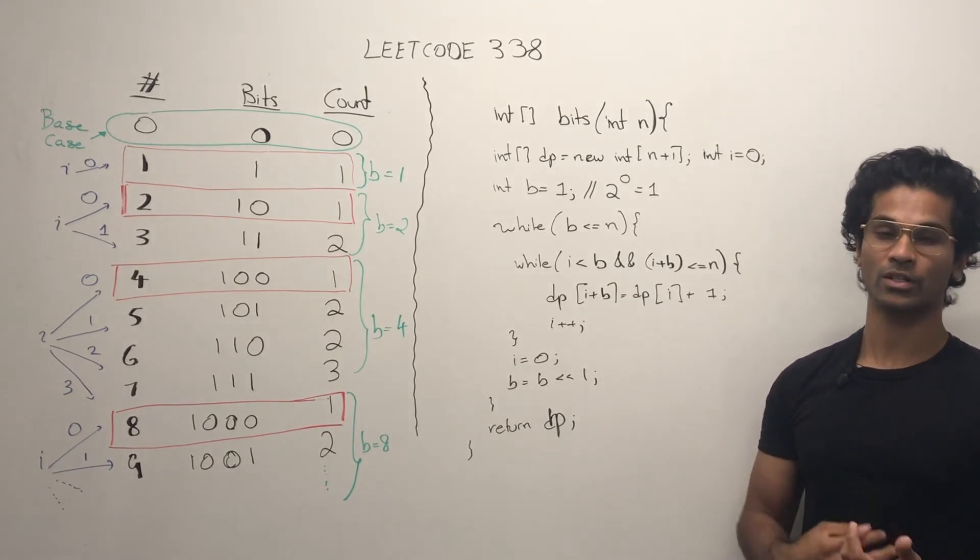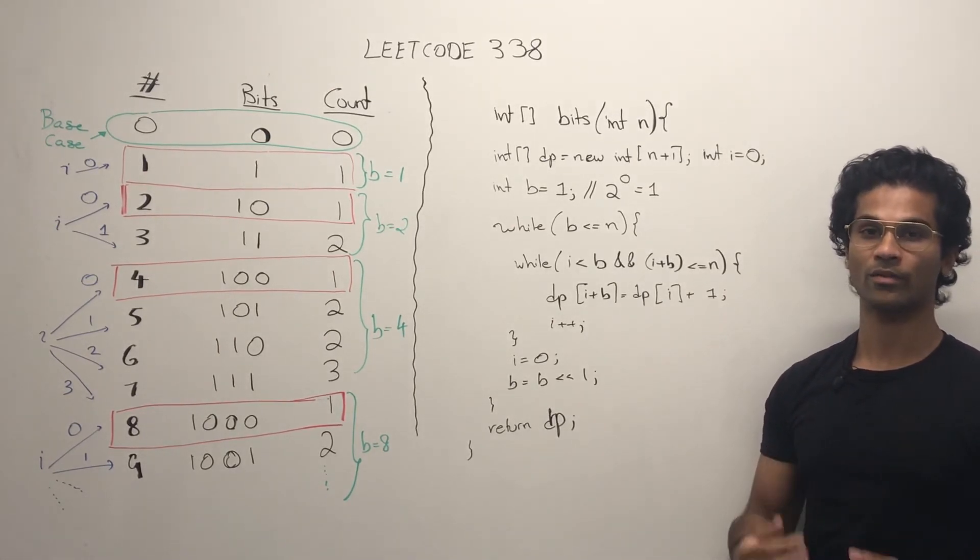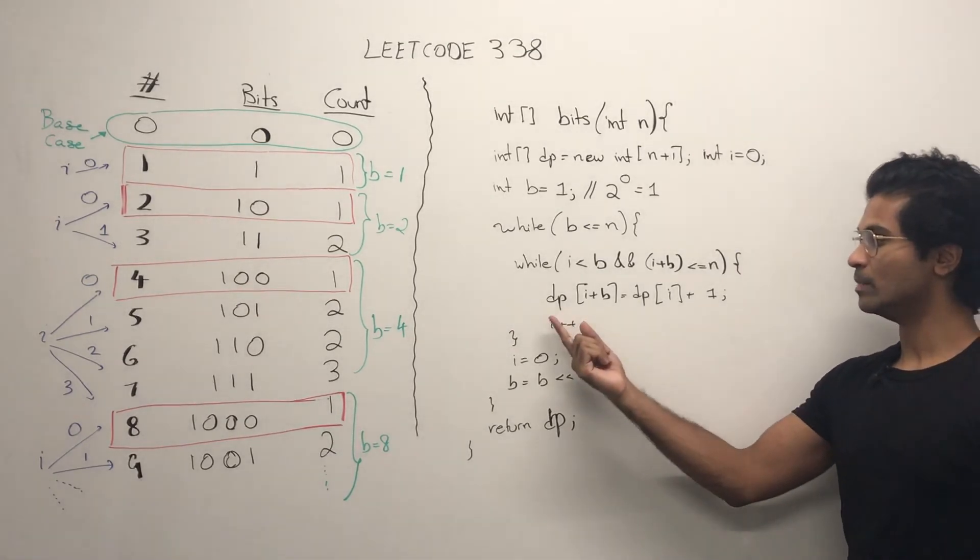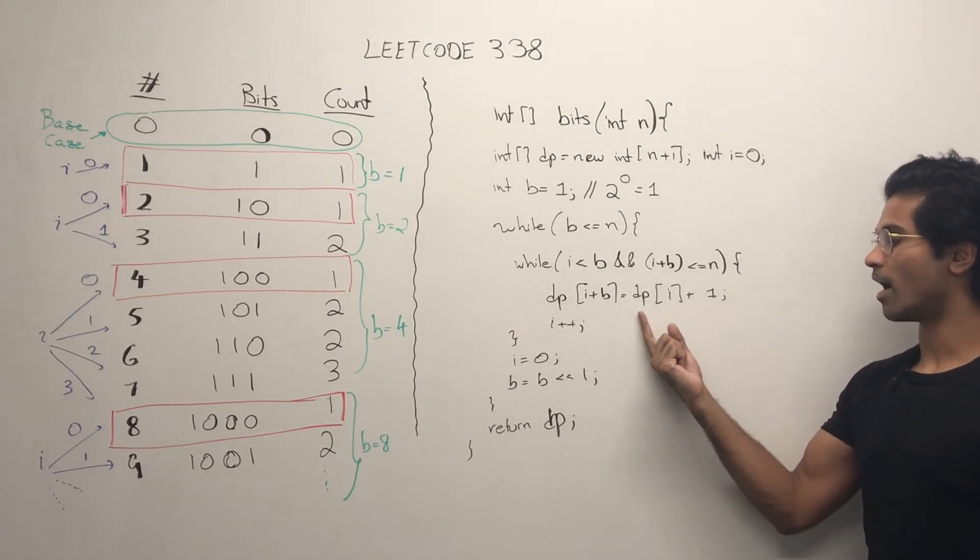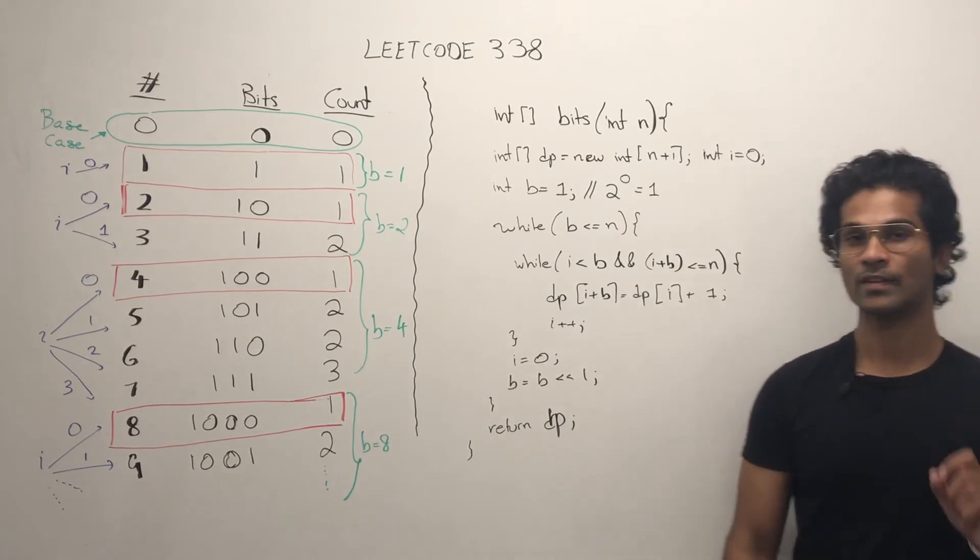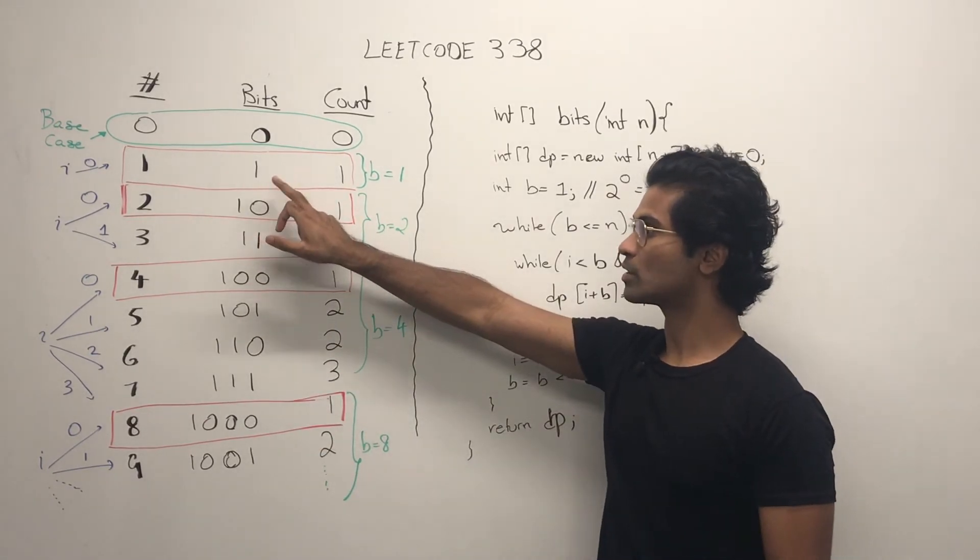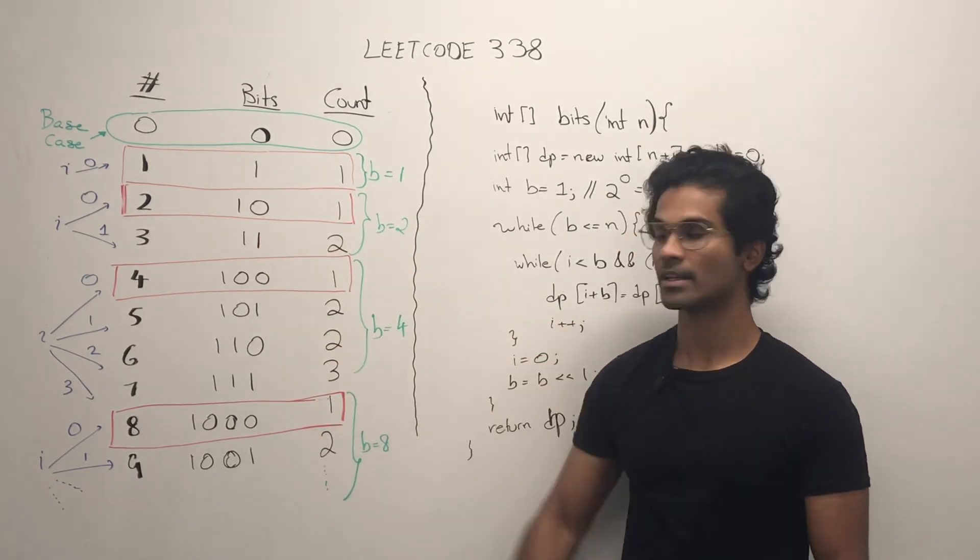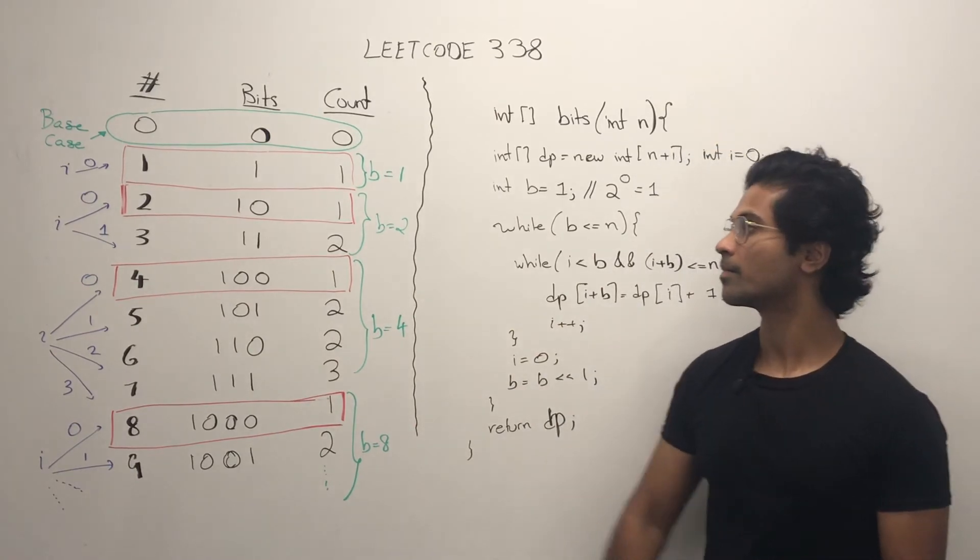Here's the recursion, not recursion, but reusing of the DP problem. DP of i plus B is going to be DP of i plus 1. So these two powers, 1, 2, 4, and 8 are reusing this base case.